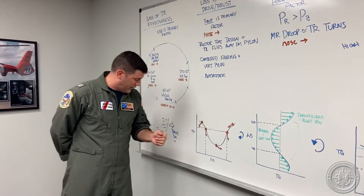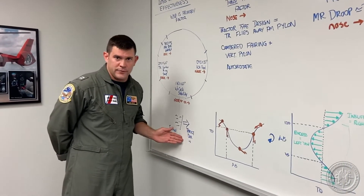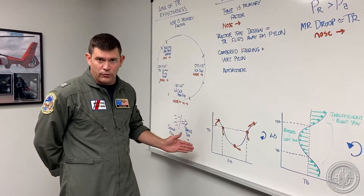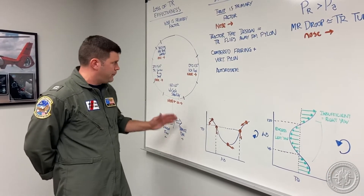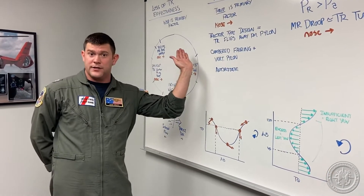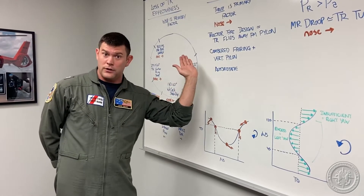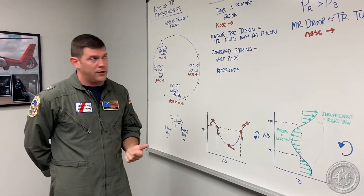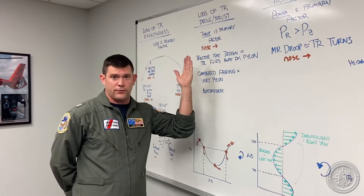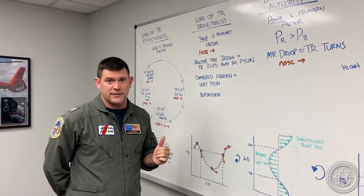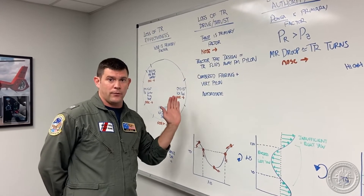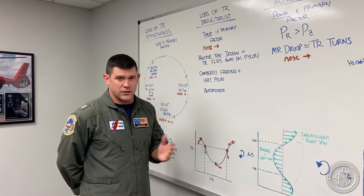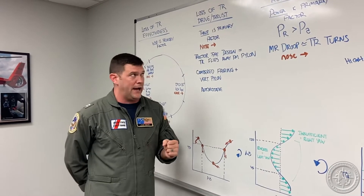As discussed in video number one, we have a tractor-type tail rotor. All that means is that a tractor pulls — it pulls the nose of the helicopter to the left by pulling the tail right. That starboard thrust vector is very important to understand when discussing loss of tail rotor thrust, because if you no longer thrust in that direction, the nose of the helicopter will violently snap to the right depending on your airspeed. The slower you are, the more violent the nose will snap.